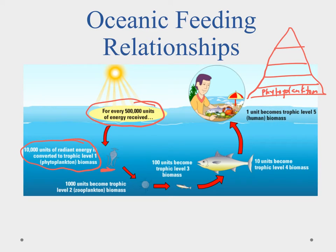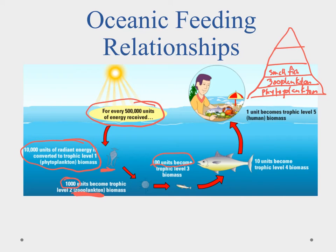Our phytoplankton is then fed on by zooplankton, with a transfer of about 1,000 units — roughly 10% transfers over. So trophic level two is made up of zooplankton, which feed on the phytoplankton. From there, 100 units transfer up to trophic level three — small fish. Then another 10%, so only 10 units, transfer to trophic level four — our big fish.